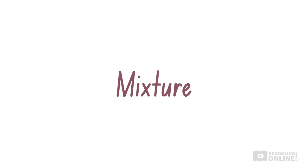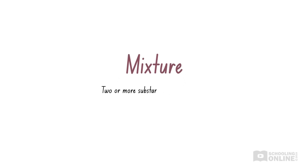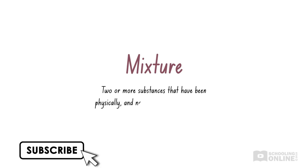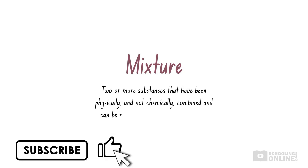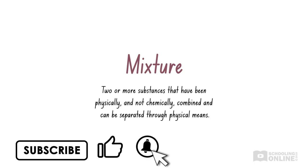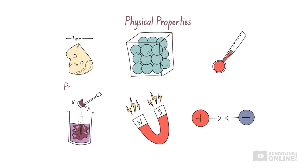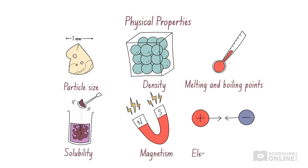In our previous lessons on separation techniques, we explored methods of separating mixtures based on particle size and density, melting and boiling point. Remember, a mixture is two or more substances that have been physically, and not chemically, combined, and can be separated through physical means. It is important to consider the properties of a mixture when applying separation techniques, as pure substances retain their distinct physical properties when mixed.